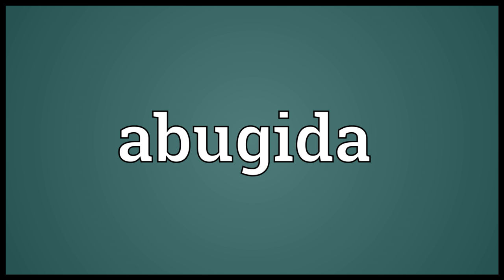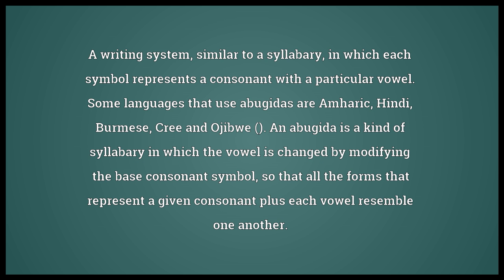Abugida. A writing system, similar to a syllabary, in which each symbol represents a consonant with a particular vowel. Some languages that use Abugidas are Emberic, Hindi, Burmese, Cree, and Ojibwe.